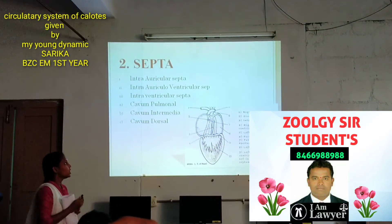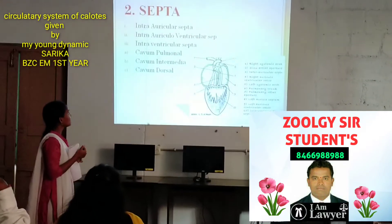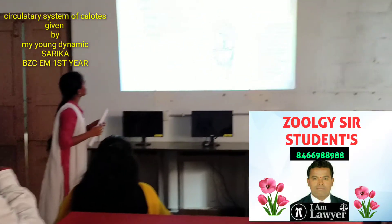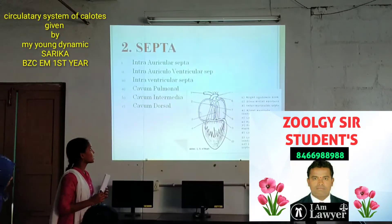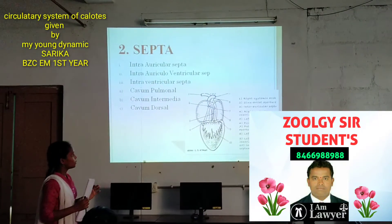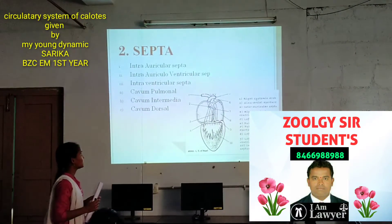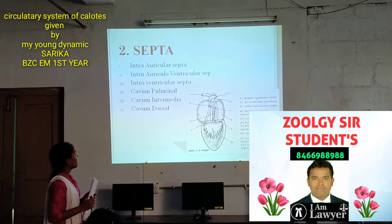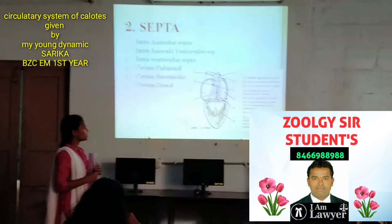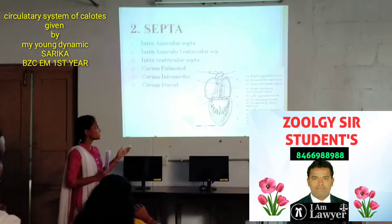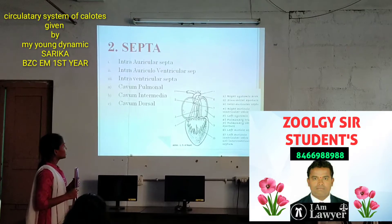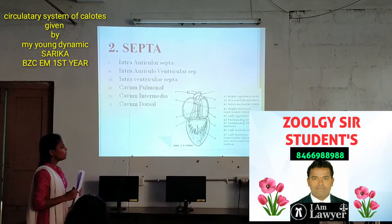Septa: the intra-auricular septa. It is the intra-auricular septa which divides the right auricle and left ventricles and right ventricles. The intra-auricular septa divides the auricles and ventricles.